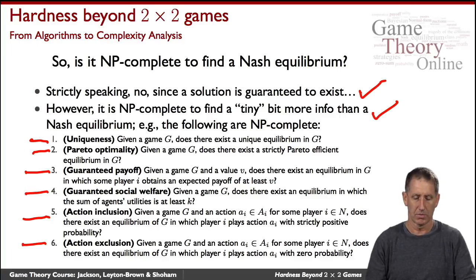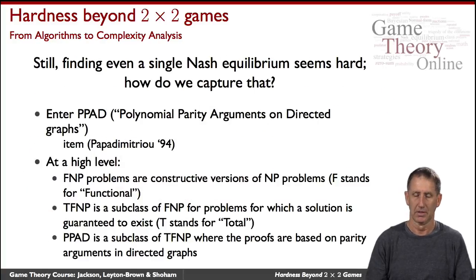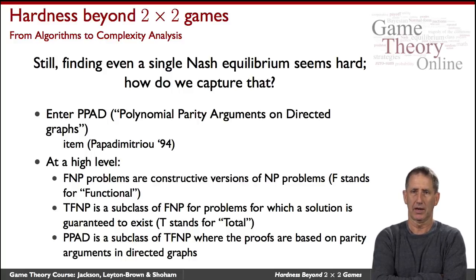That tells us something about the hardness. But still, we still ask about just finding a single Nash equilibrium. How hard is that? We've seen the algorithms. People have tried very hard to find algorithms computing a single Nash equilibrium. And it does seem hard. The question is can we somehow capture that formally within the complexity hierarchy?